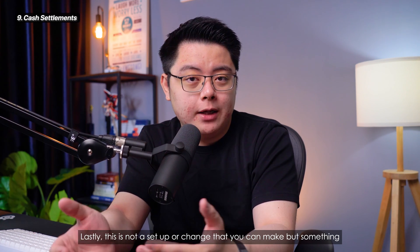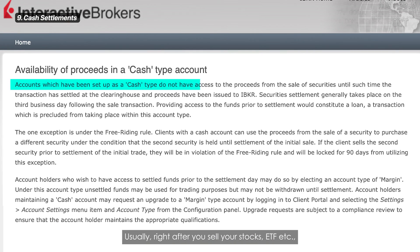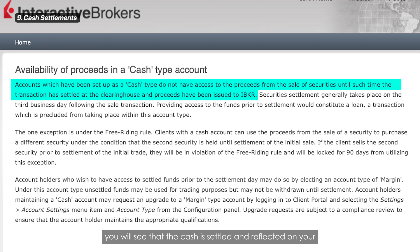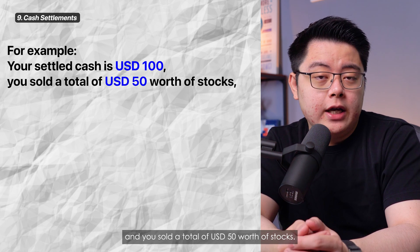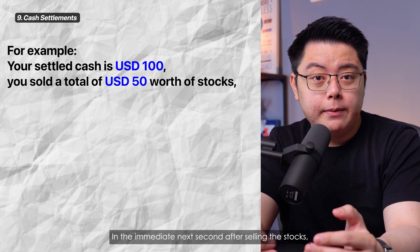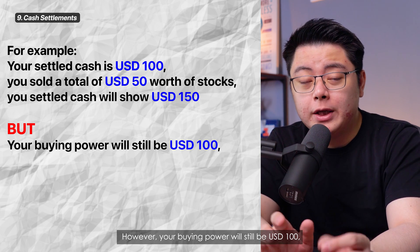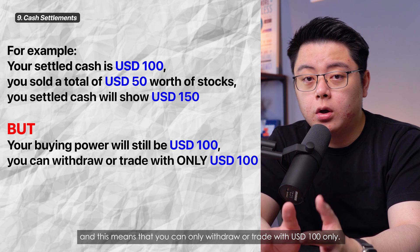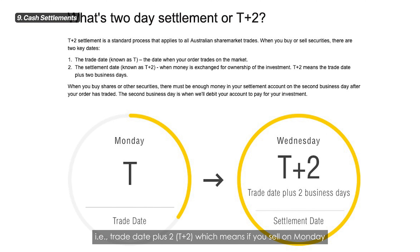Lastly, this is not a setup but something important to note if you are new to the stock market: cash settlement. Right after you sell your stocks or ETFs, you will see the cash reflected in your settled cash balance — but this will not be the amount you can withdraw or use for another trade immediately. For example, if your settled cash before selling is US$100 and you sell US$50 worth of stocks, your settled cash will show US$150 immediately after. However, your buying power will still be US$100, because stock settlement takes place on the second business day following the transaction — T+2 — meaning if you sell on Monday, settlement is on Wednesday.